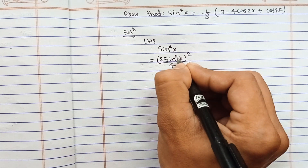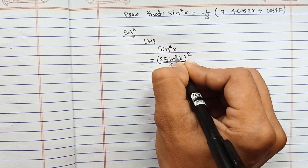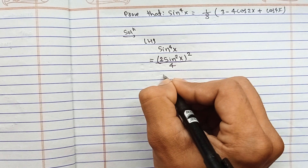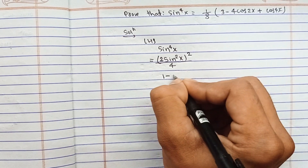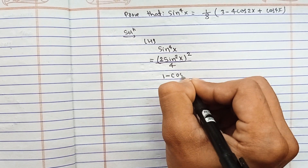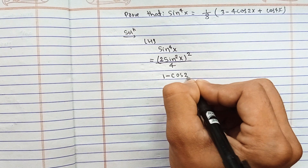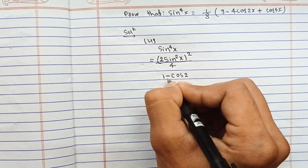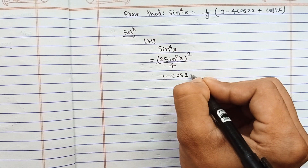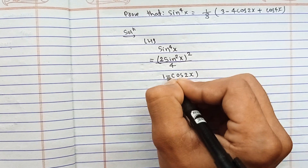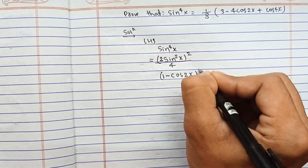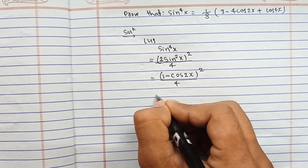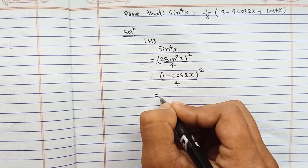Now you can write 2 sine square x: 2 sine square x means 1 minus cos 2x. Apply the formula here: 1 minus cos 2x, whole square, upon 4.